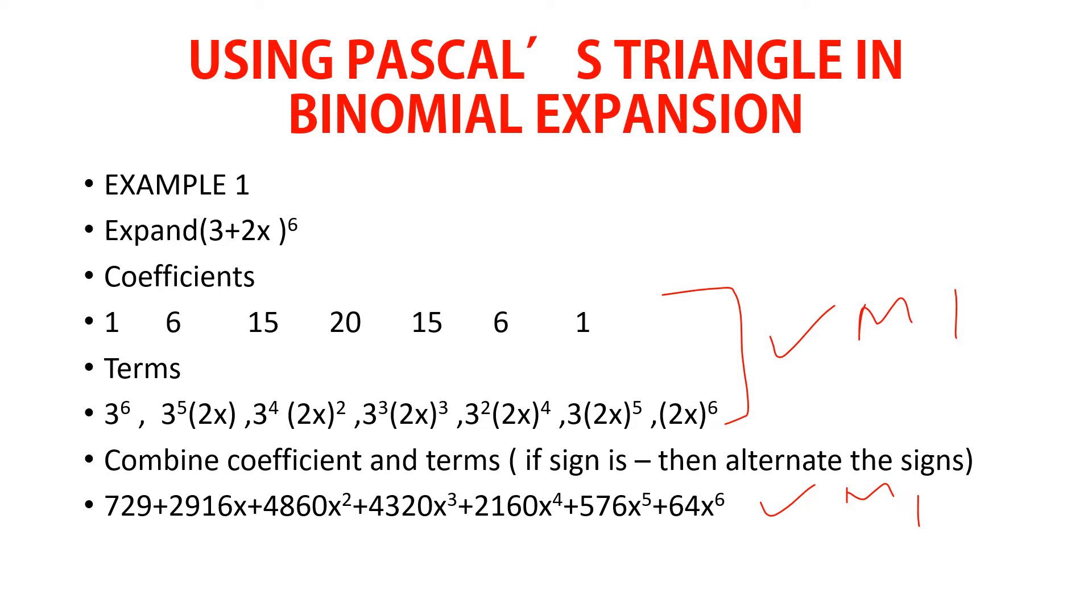Here is my example using Pascal's triangle in binomial expansion. Example 1: Expand (3+2x) raised to power 6. I have taken this example because most of the expansion would have 1 plus maybe x, but I want to pick this one for my reasons. Because 3 should be raised to power and 2x should also be in brackets as you will see as we continue.